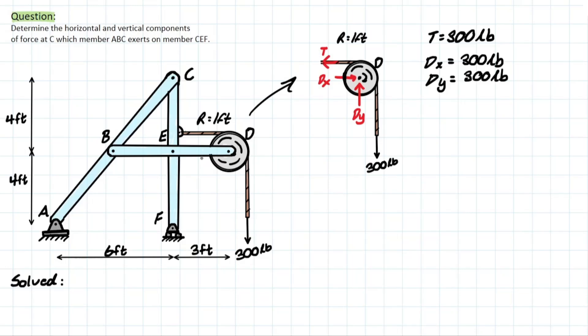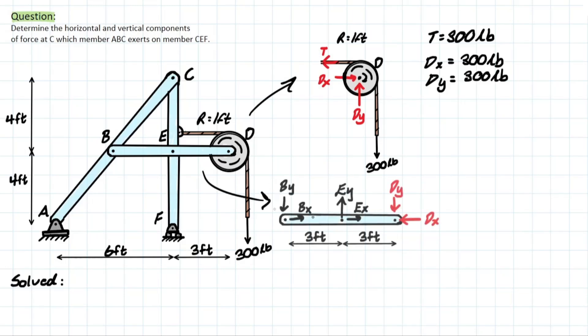Looking at member BED, we can see the reactions at B and E, along with the equal-and-opposite Dy and Dx we solved previously. Using our equilibrium equations, my first instinct is to take the summation of moments at B equal to zero. This eliminates several forces right away — Bx, Dx, and By all produce no moment at B, leaving only Ey and Dy.